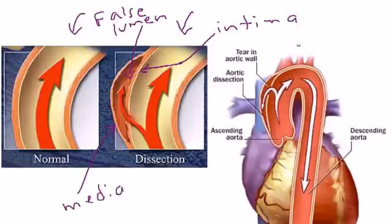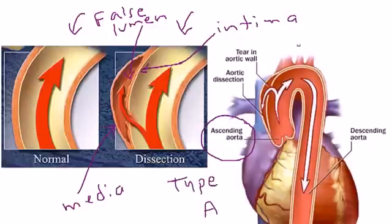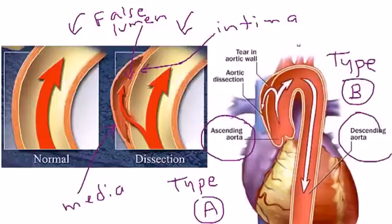Aortic dissections are broken up into two types. There's the ascending aorta, aortic dissection of the ascending aorta, which is known as a type A aortic dissection. And then there's the aortic dissection of the descending aorta, which is known as type B. The treatment differs for each one, and I'll discuss that a little later on.